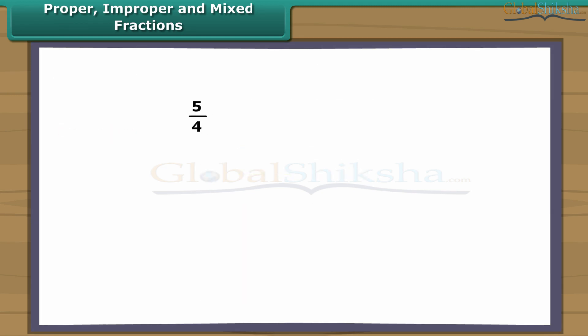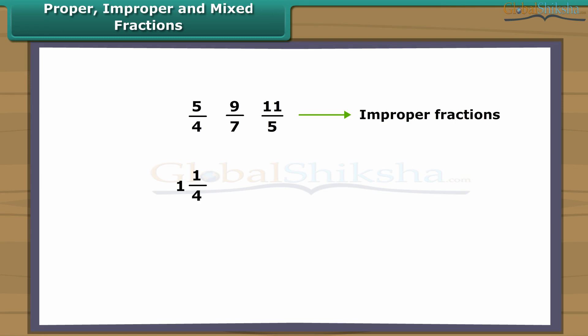Improper fractions can be written as a combination of a whole and a proper fraction. Thus, these improper fractions can be written as one and one-fourth, one and two-sevenths, and two and one-fifth respectively. Such fractions are called mixed fractions.